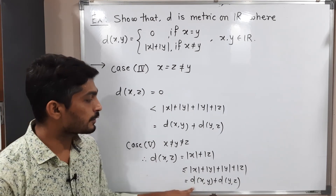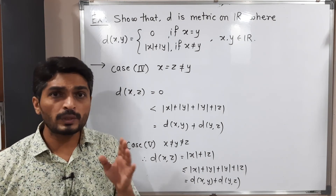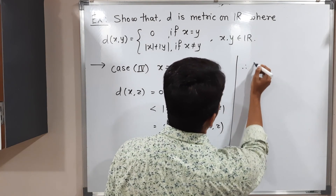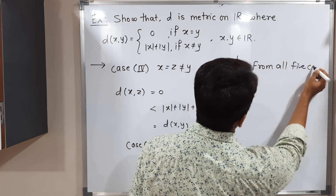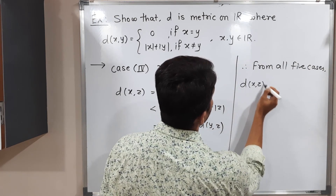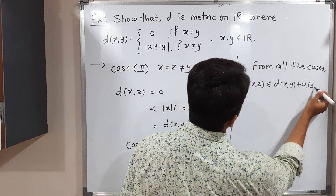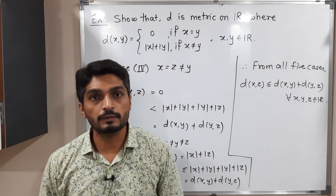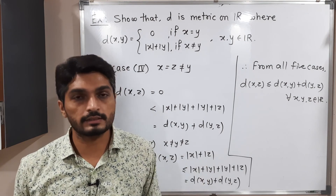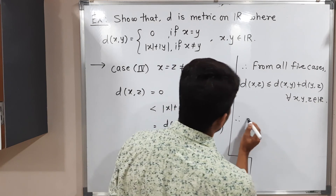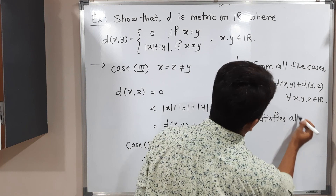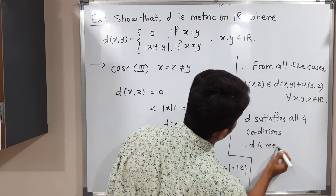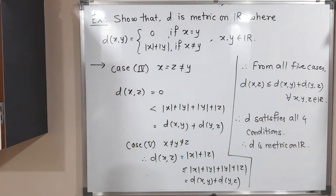Therefore, from all five cases, D(X,Z) ≤ D(X,Y) + D(Y,Z) for all X, Y, Z ∈ ℝ. This means D satisfies the triangle inequality — the last condition. Since D satisfies all four conditions, we can declare: therefore, D is a metric on ℝ.